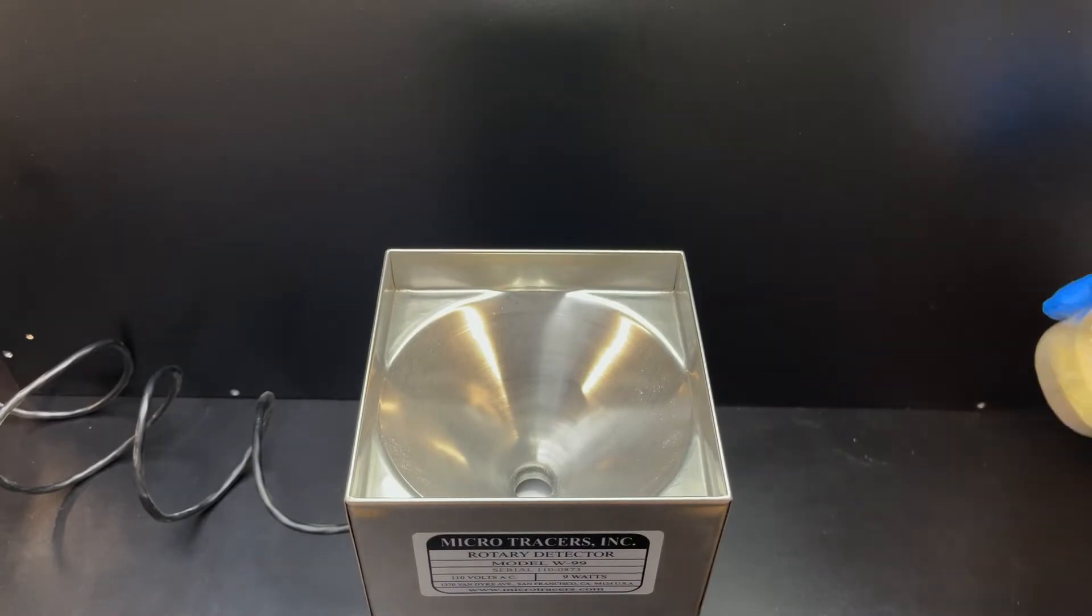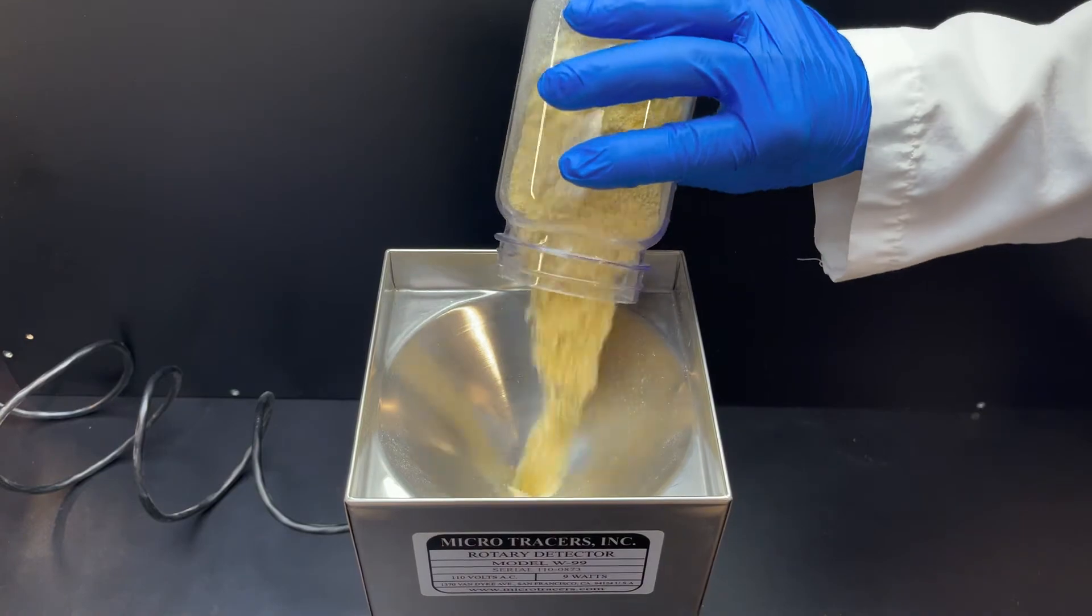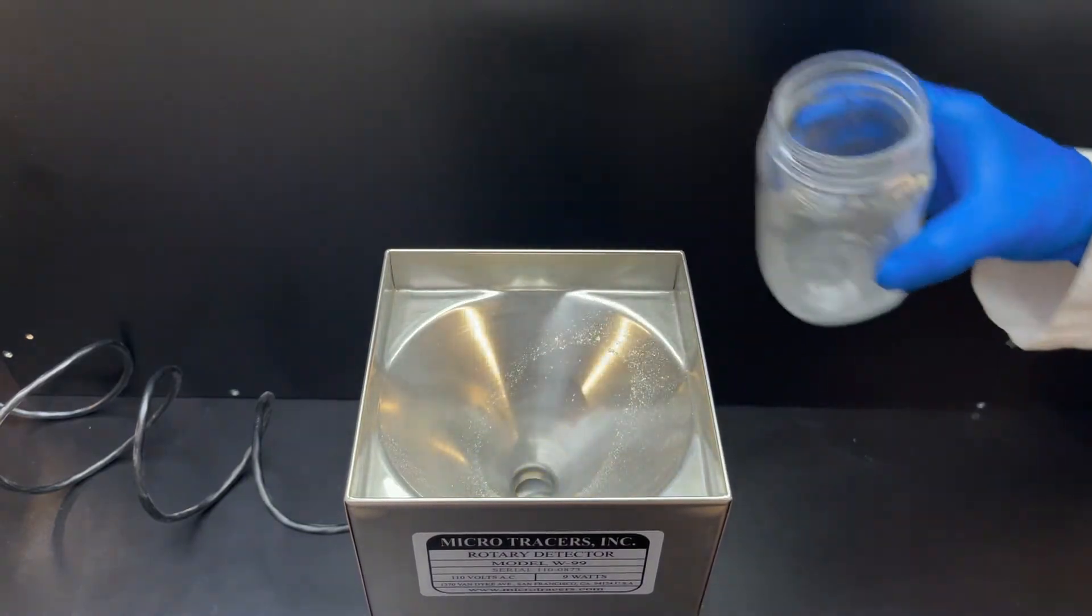Pour the feed sample slowly into the upper hopper of the rotary detector. If the feed becomes stuck, use the artist fan brush to unclog the feed.